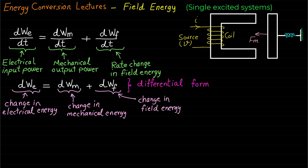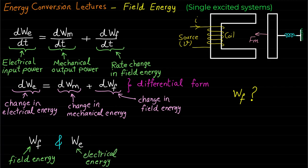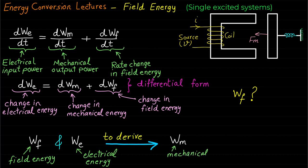However, we still need to understand and find a mathematical expression for the field energy WF, as it is related to the movement and can help in deriving the expression for the force and torque of electromechanical energy conversion devices. Basically, if we understand the field energy WF and the electrical energy WE, then we should be able to derive an expression for the mechanical energy, and specifically mechanical force or mechanical torque.